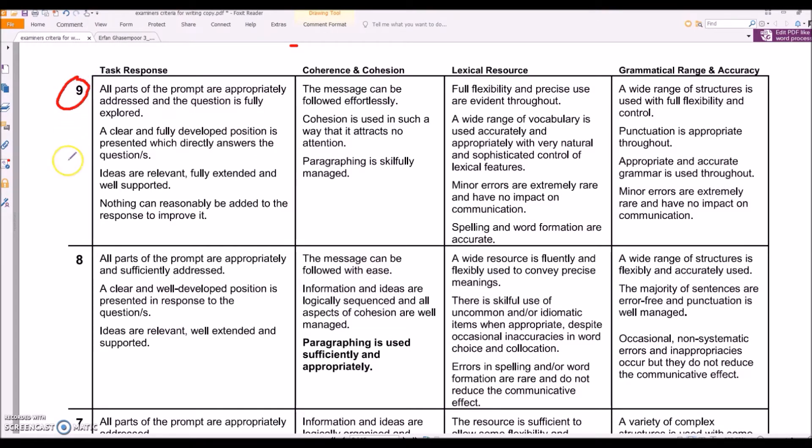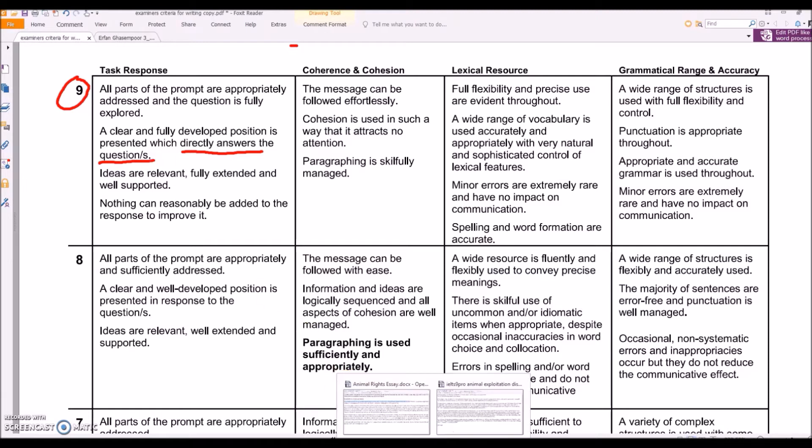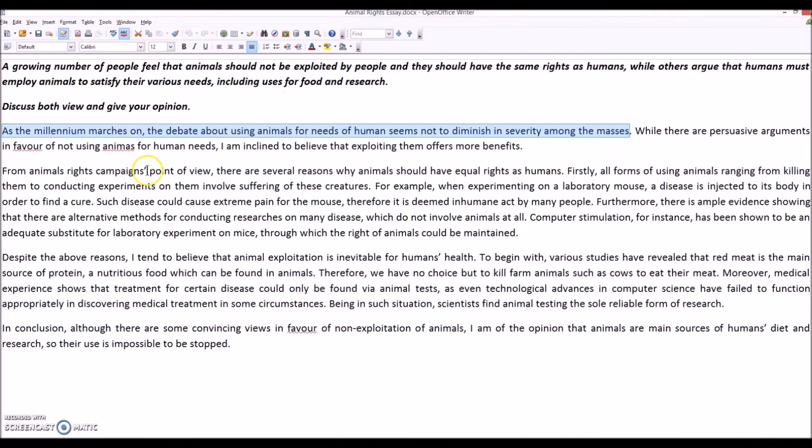Now look, let me show you this, right? So to get a nine, obviously you're aiming for above that, but still, a clear, fully developed position which directly answers the question. So this is key. The high-scoring essay, we have to directly, not go round about, you know, like as the millennium marches on, seems not to diminish. But that's not really what the question says.